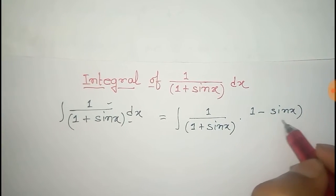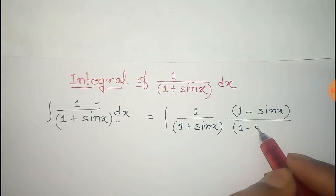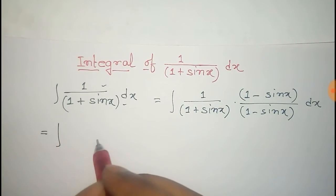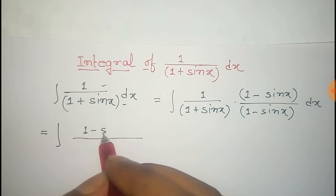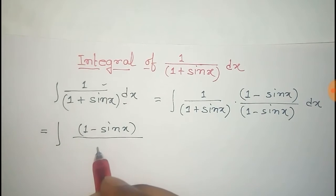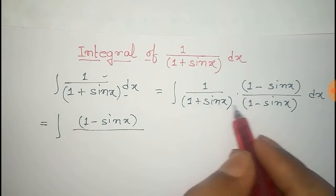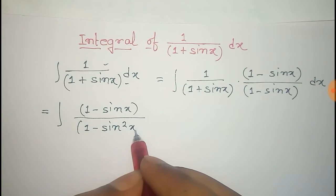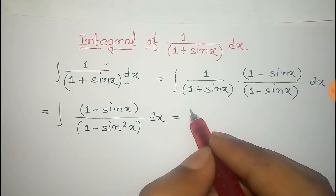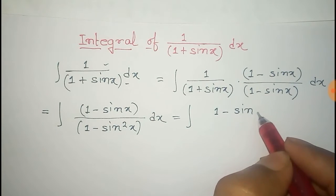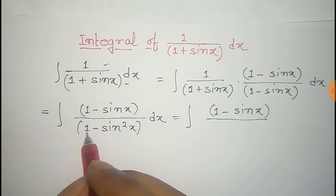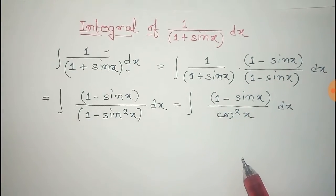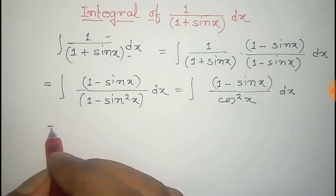The numerator term will be 1 minus sin x, and the denominator term after multiplication will be 1 minus sin squared x, times dx. That equals 1 minus sin x over 1 minus sin squared x. We can write the 1 minus sin squared x term as cosine squared x, giving us 1 minus sin x divided by cosine squared x, times dx.